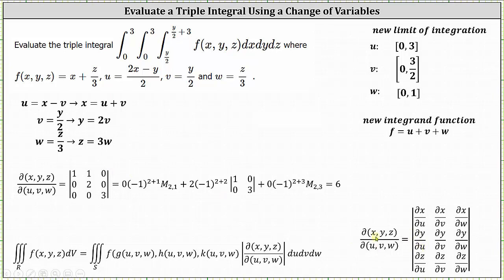In row two, the partial of y with respect to u: since y equals two v, the derivative of two v with respect to u treating v as a constant is zero. The partial of y with respect to v: the derivative of two v with respect to v is two. The partial of y with respect to w: there is no w, so the partial derivative is zero. In row three, the partial of z with respect to u: since z equals three w, the derivative with respect to u is zero. The partial of z with respect to v: there is no v, so the partial derivative is zero. The partial of z with respect to w: the derivative of three w with respect to w is three.